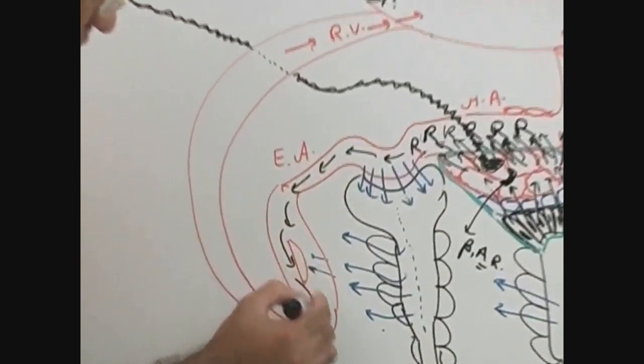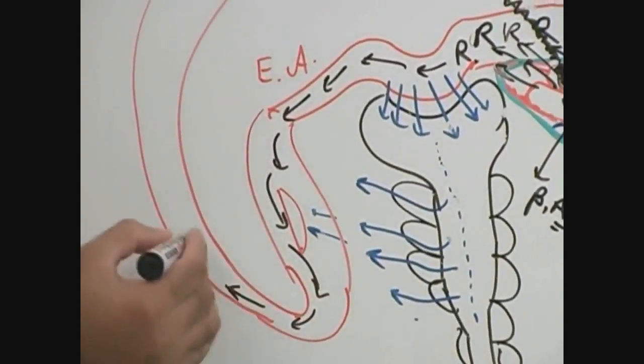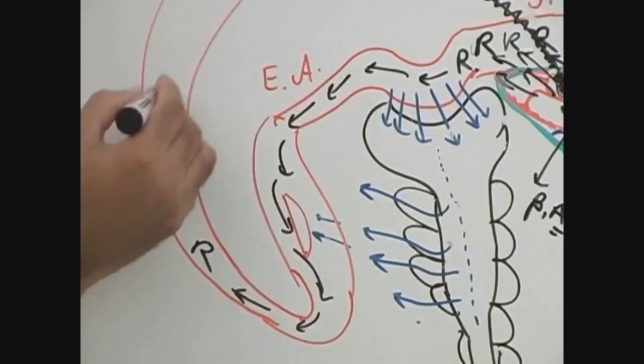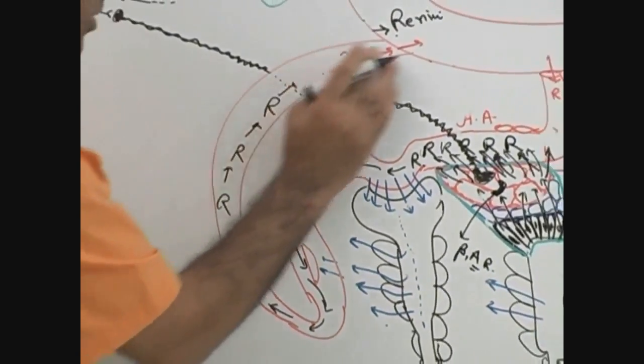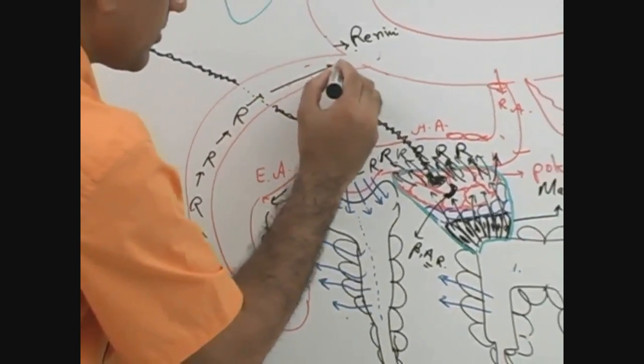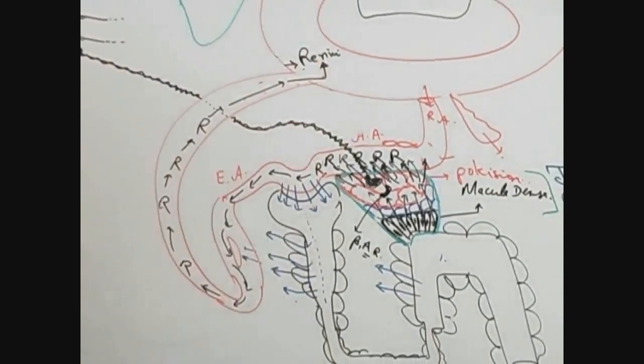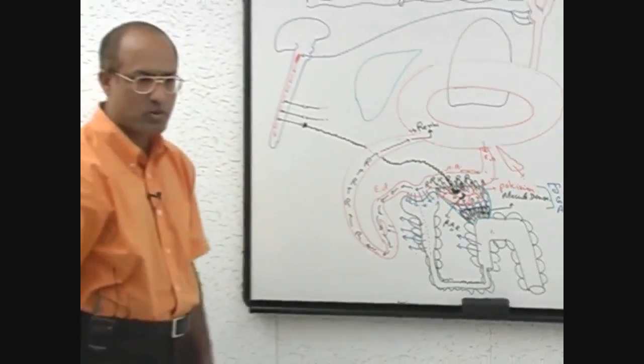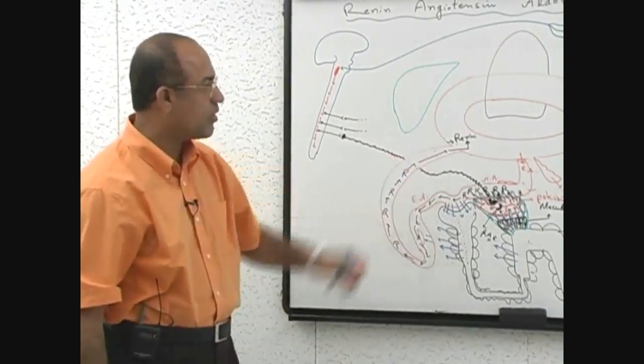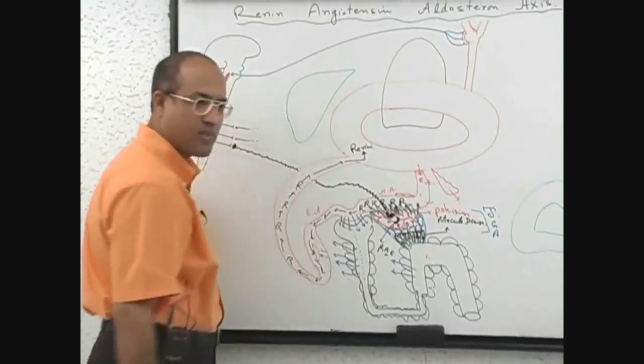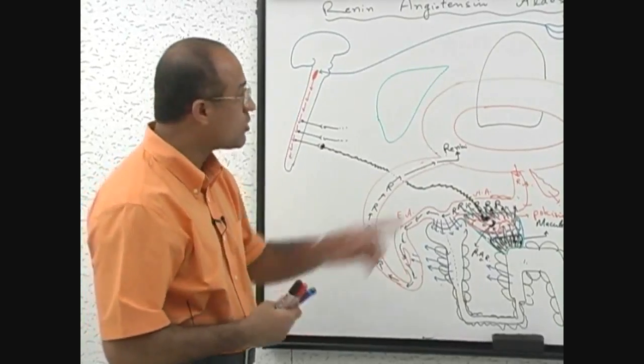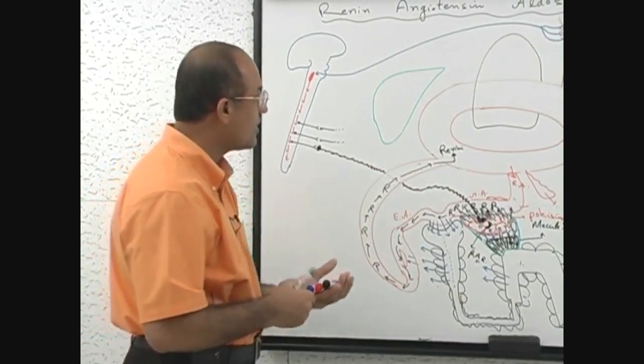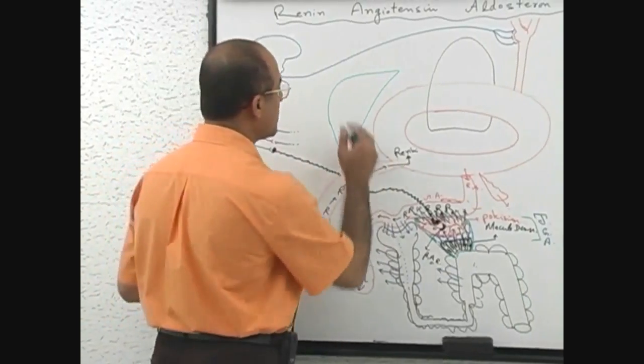This renin is going to the general circulation through the renal vein. Now renin has come to the systemic circulation. What will renin do here? I told you renin is an enzyme, and every enzyme works on a special type of substrate.